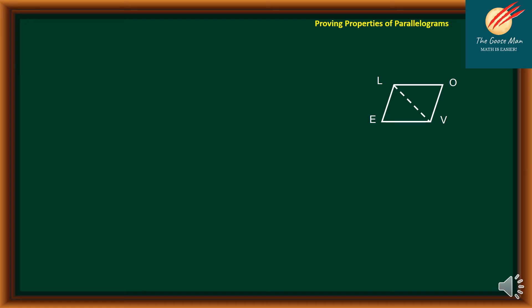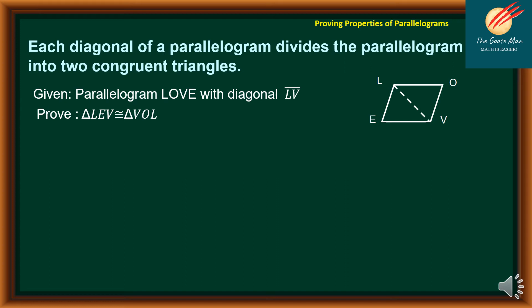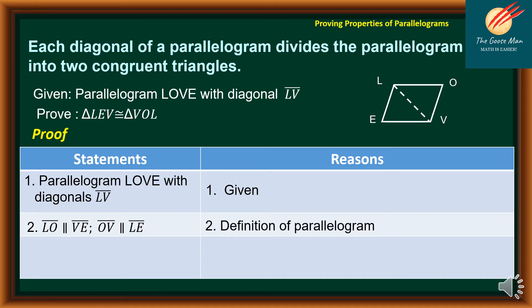Let's move on to the fifth property of a parallelogram: each diagonal of a parallelogram divides the parallelogram into two congruent triangles. We have parallelogram LOBE with diagonal LB. We would like to prove that triangle LEB is congruent to triangle BOL. For statement number one, parallelogram LOBE with diagonal LB — reason is given. For number two, line segment LO is congruent to line segment BE, and line segment OB is parallel to line segment LB — definition of parallelogram.